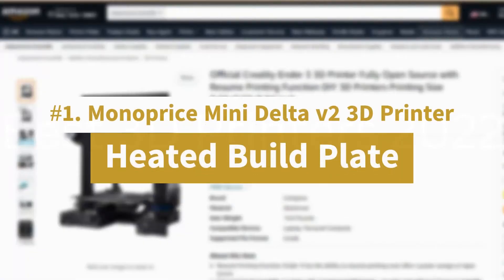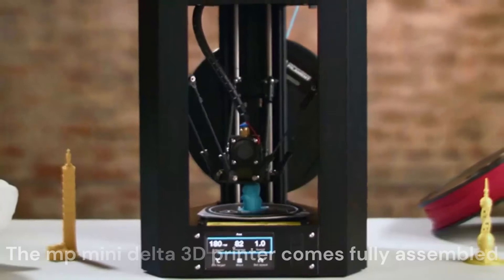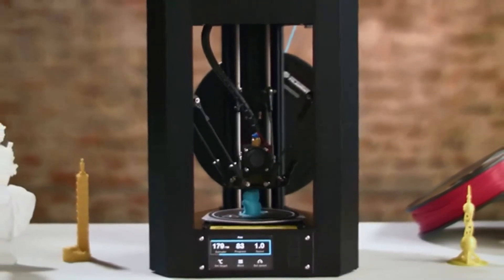Number 1. Monoprice Mini Delta V2 3D Printer Heated Build Plate. Fully assembled, the MP Mini Delta 3D printer comes fully assembled, ready to print out of the box.